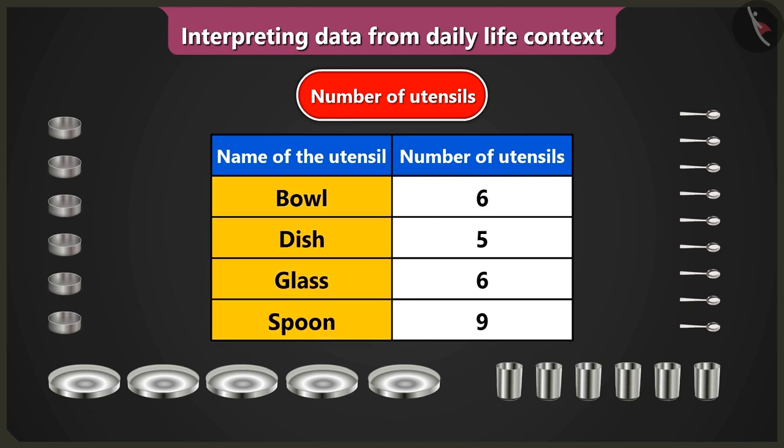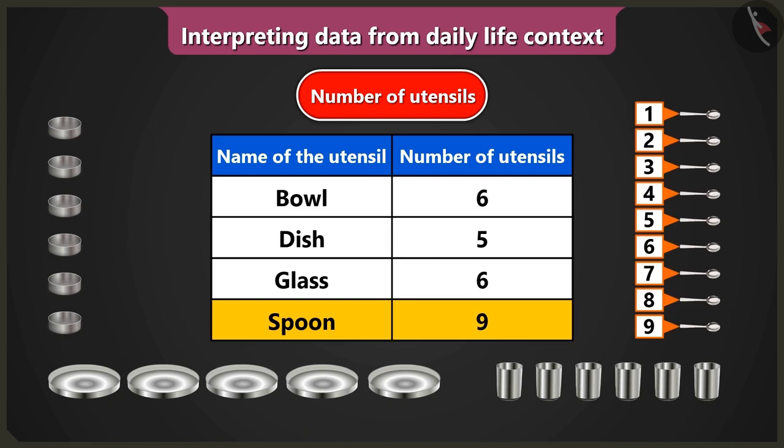So the data about four kinds of utensils is given. Here the number of bowls is six, the number of dishes are five, the number of glasses are six and the number of spoons are nine.